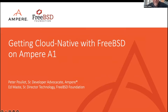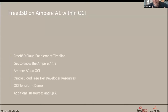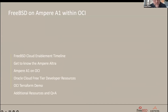My name is Peter Pulliat. I'm from Ampere Computing — we're a cloud native processor company. What I'd like to talk about today is a little bit about the timeline for FreeBSD cloud enablement, specifically in OCI; give you information on the chipsets we have enabled in OCI, specifically the Ampere Ultra; talk about our available instances for development; the free tier that Oracle provides; and then give you a demo of using FreeBSD in Oracle's Cloud via Terraform, followed by Q&A.